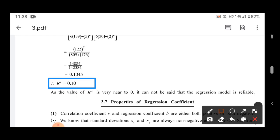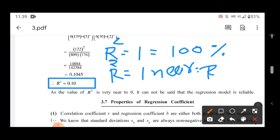As the value of R square is very near to 0, it cannot be said that the regression model is reliable. So the thing is, if R square value is 1, we will say that what we found is 100% reliable. The regression model is 100% reliable. R square value is not coming close to 1, so we will write that it is only fairly reliable.